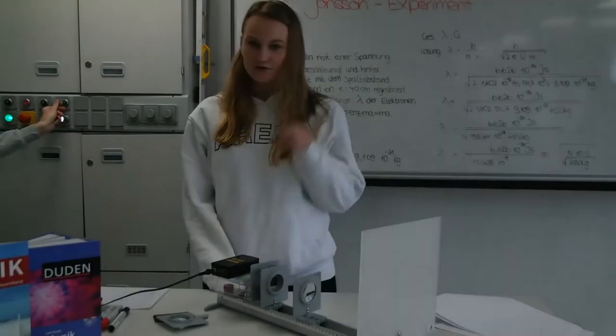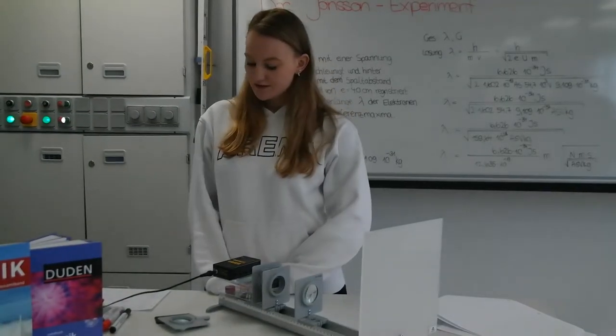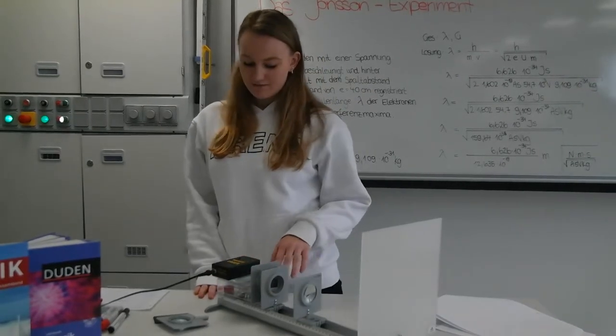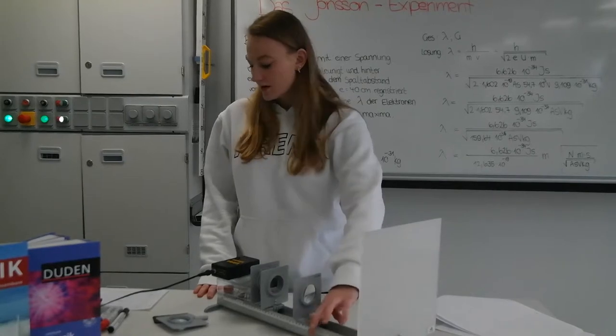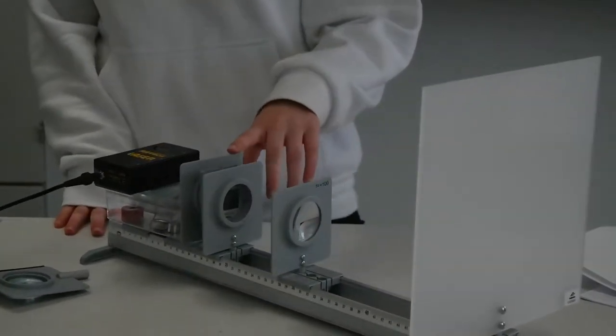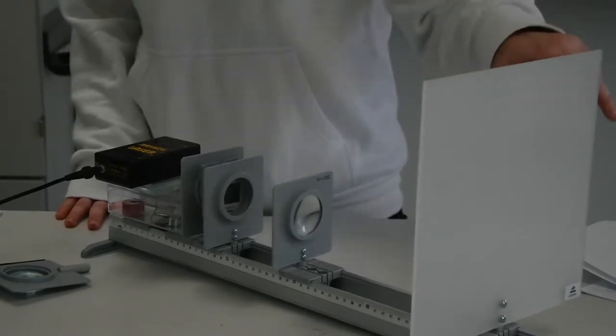Please. We perform the Jönsson experiment in modified form. We want to use a laser at the electron source. As equipment we use an optical bench, a double-slit, a condensing lens, an imaging lens, and a screen.